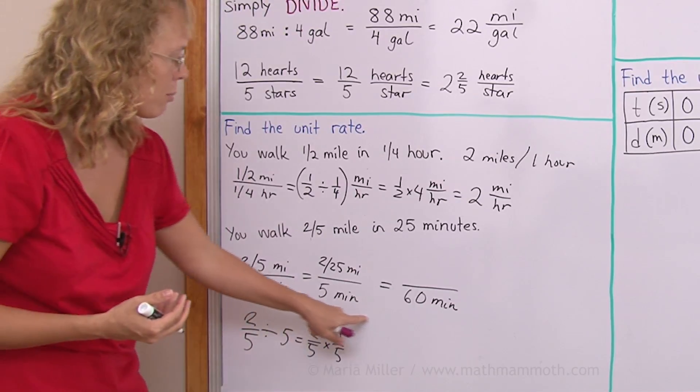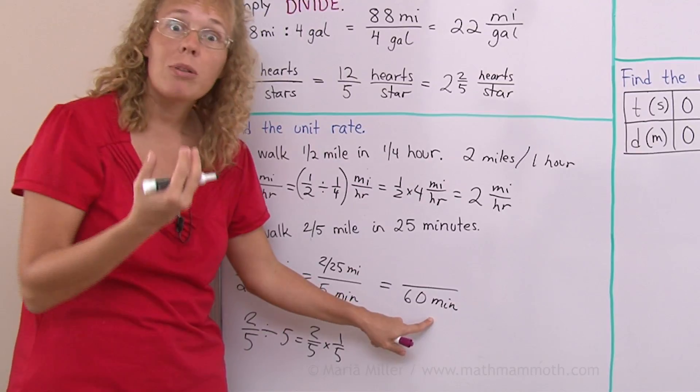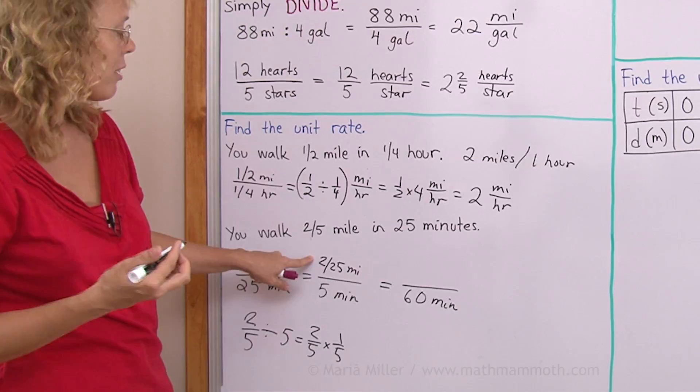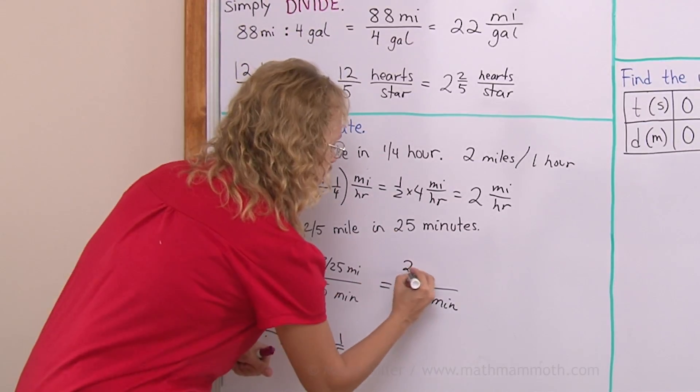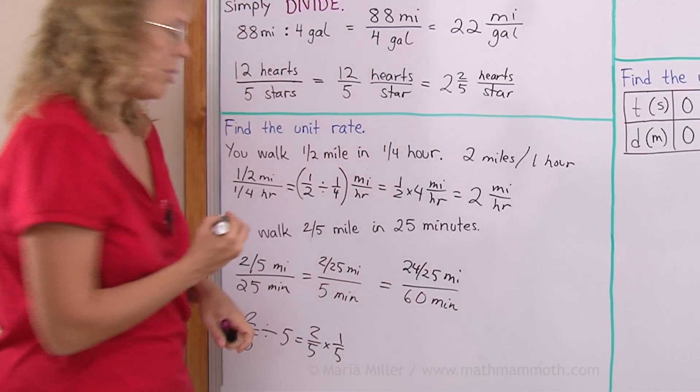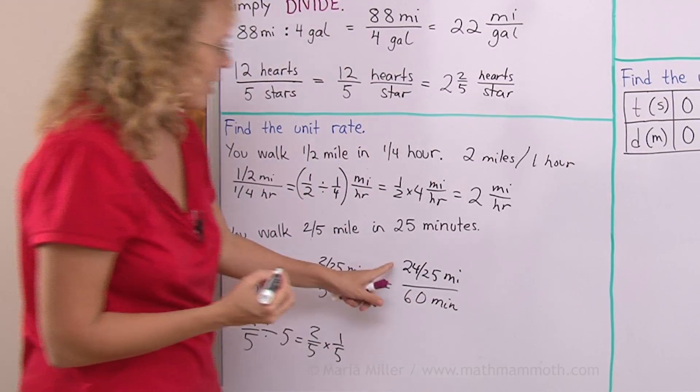And now, from here to here, I would multiply by 12, right? 12 times this number, 12 times this fraction. So I get 12 times 2 is 24. 24 over 25 miles per 60 minutes. So this is now the unit rate. 60 minutes is equal to one hour, of course.